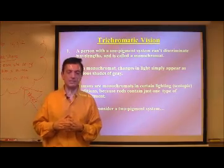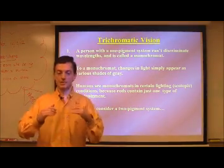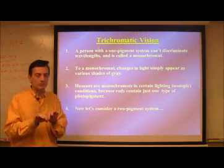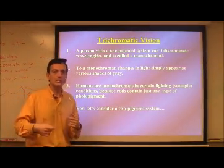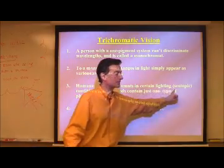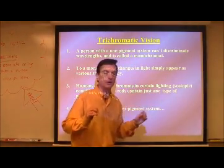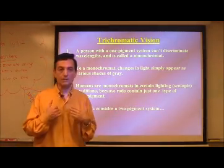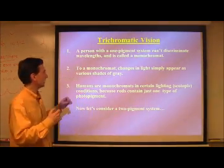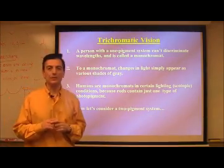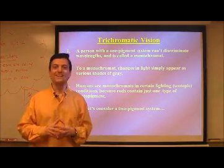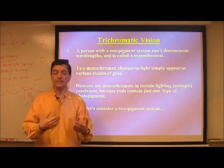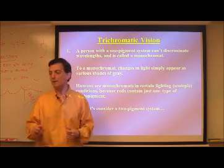Our cone opsins tend to be a little bit less sensitive — they need more photons before they engage in cis-trans isomerization. So when you and I are in extremely low light levels, only our rods might be operating; we call these scotopic conditions. Because we only have one type of rhodopsin in our species, we are essentially monochromatic. This is why I suggested earlier that it's not all that hypothetical — we are in general trichromats, but under scotopic conditions we could be rendered monochromatic.